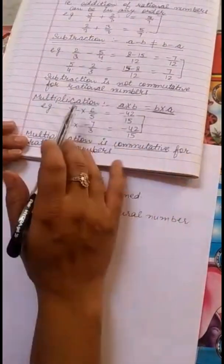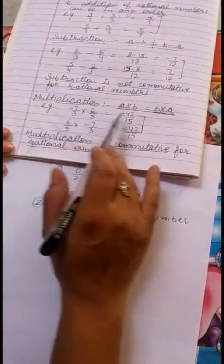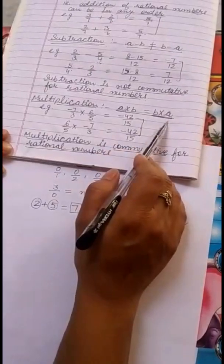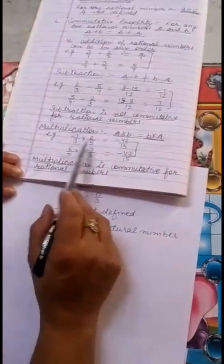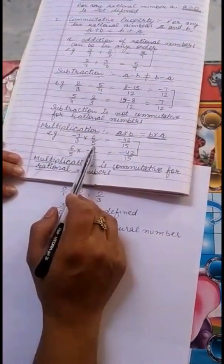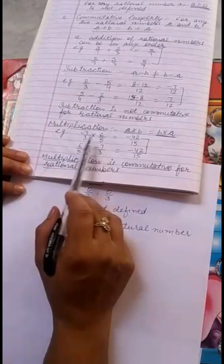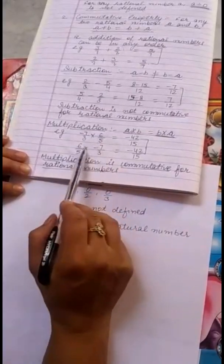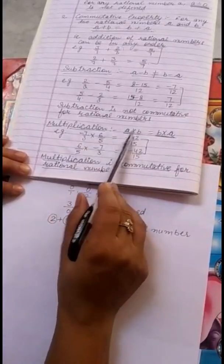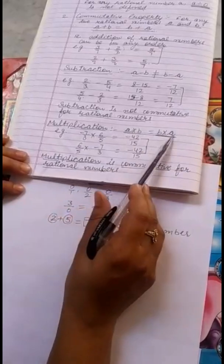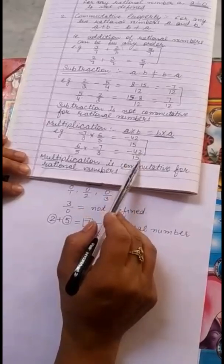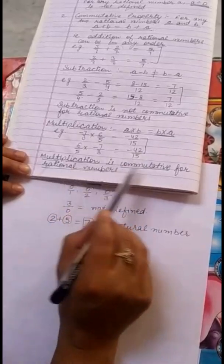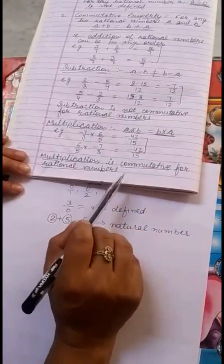Similarly, as addition is commutative, multiplication is also commutative. A multiplied by B is equal to B multiplied by A. Taking minus 7 by 3 multiplied by 6 by 5, the product is minus 42 by 15. Changing the order, it is again minus 42 by 15. Both answers are the same, so multiplication is commutative for rational numbers.